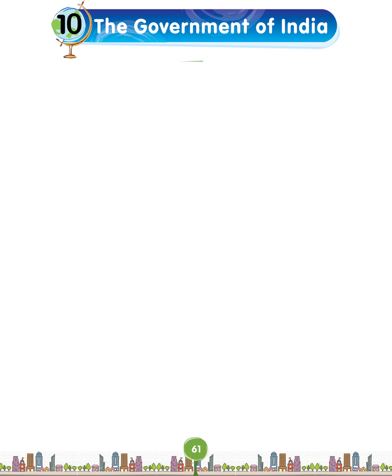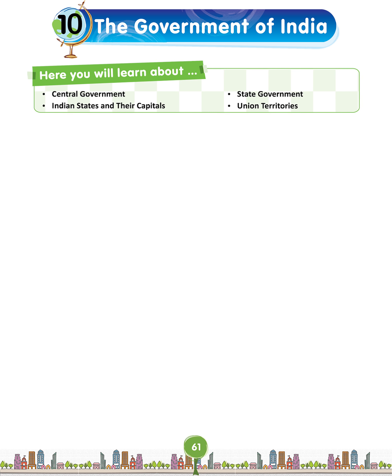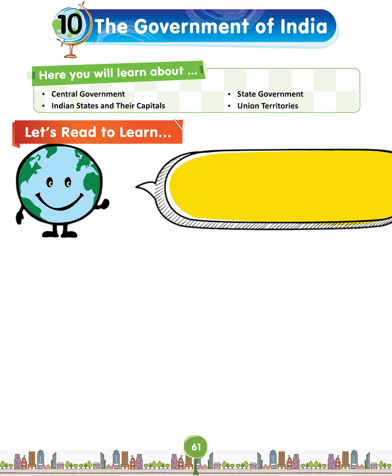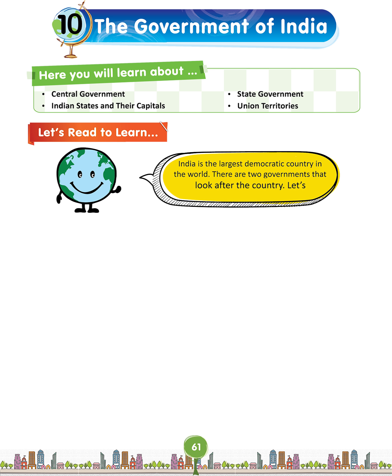Let's start Lesson 10: The Government of India. Here you will learn about Central Government, State Government, Indian States and their Capitals, and Union Territories. Let's read to learn. India is the largest democratic country in the world. There are two governments that look after the country.